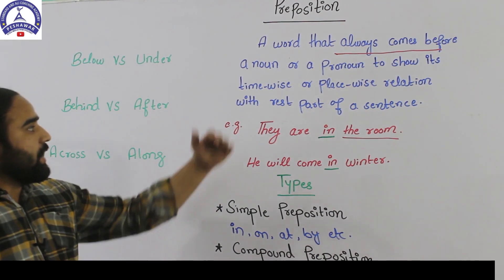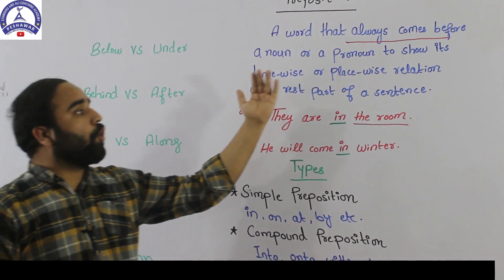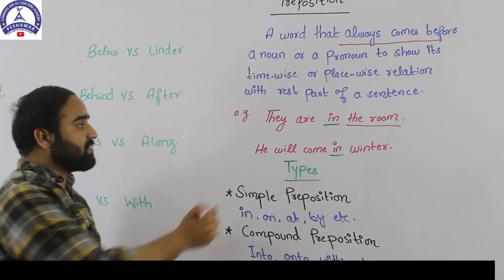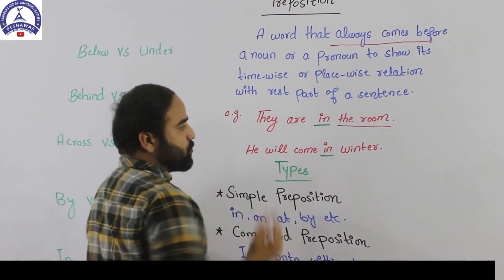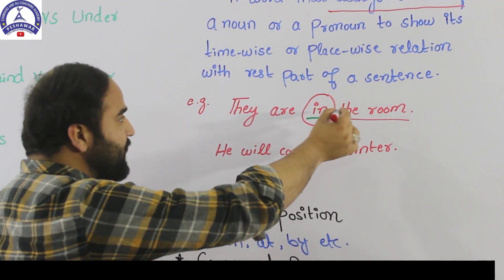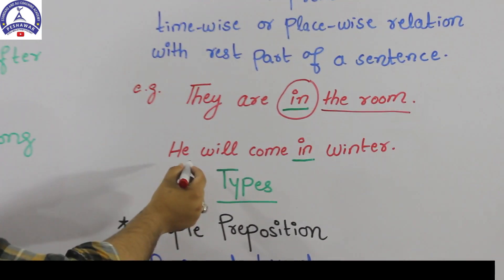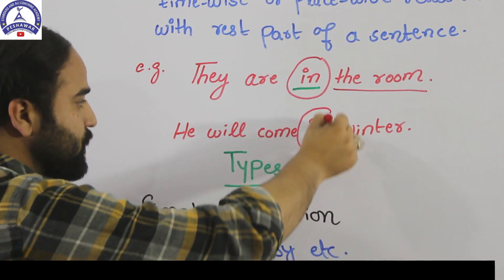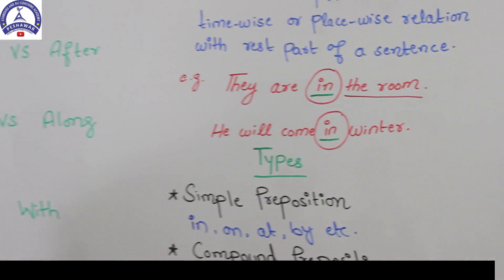It shows time-wise or place-wise relation. In the first example, 'they are in the room' — the word 'in' is showing place-wise relation. And here, 'he'll come in winter' — the word 'in' is showing time-wise relation.